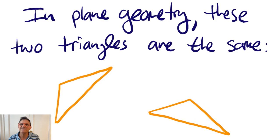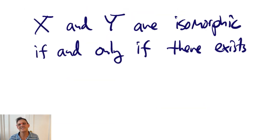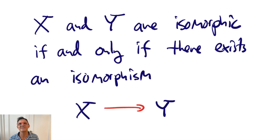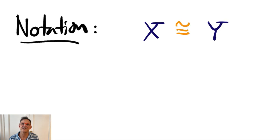More generally, we say objects are isomorphic if and only if there exists an isomorphism taking one to the other. It's a tradition to use an equal sign with a tilde over it to denote objects that are isomorphic or when a morphism is an isomorphism. Now, back to topology.